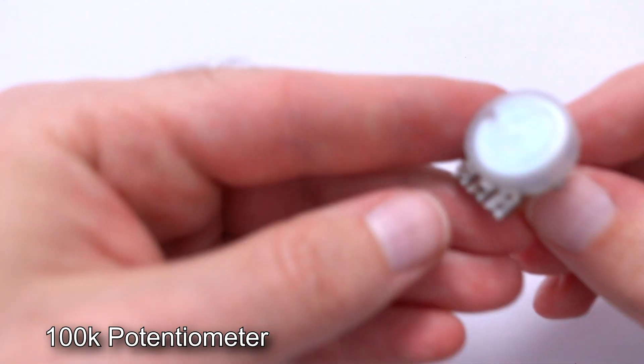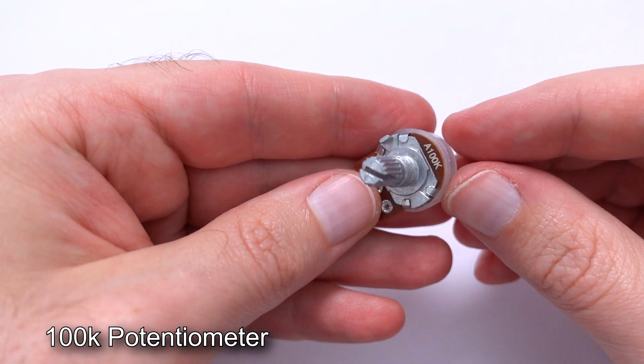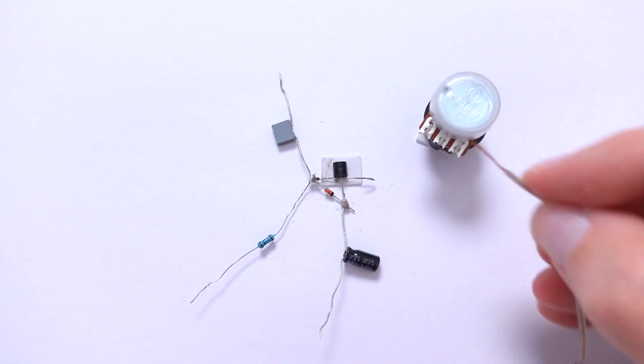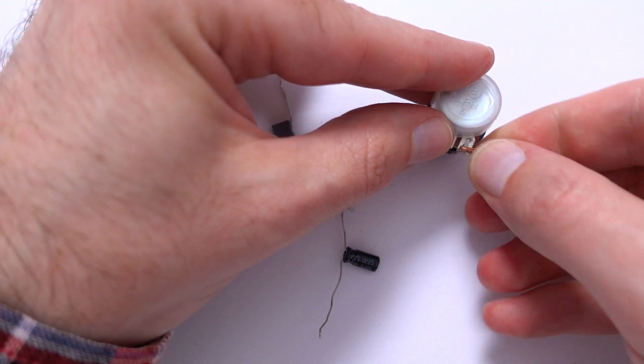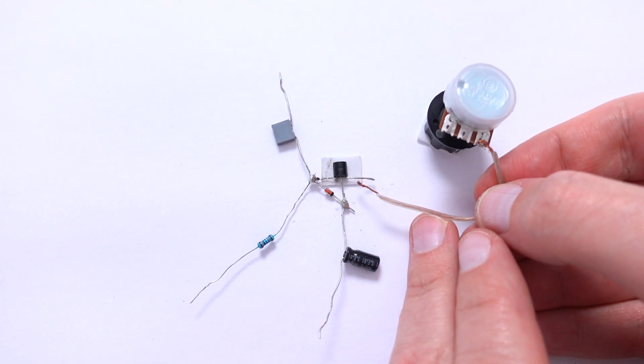Now we need 100,000 potentiometer. It has three terminals. Its right terminal connect to the only free right pin of transistor.